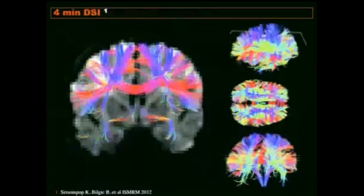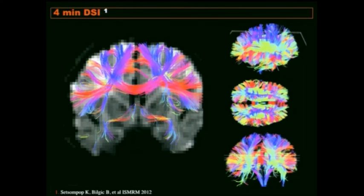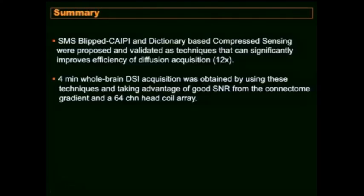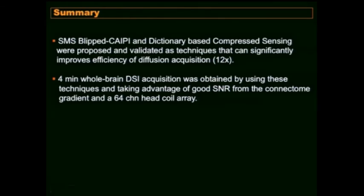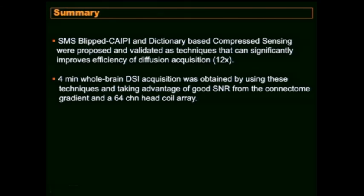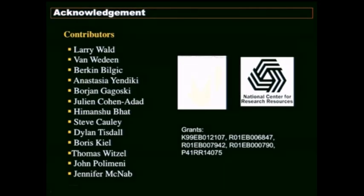Here are additional images from the acquisition showing that with DSI you can clearly differentiate crossing fibers and get high-quality images. In summary, we proposed SMS blip-CAIPIRINHA and dictionary-based compressed sensing, validated these techniques, and demonstrated a factor-of-12 improvement in diffusion imaging efficiency, enabling a 4-minute DSI acquisition taking advantage of the excellent SNR provided by the connectome hardware and 64-channel head coil array.